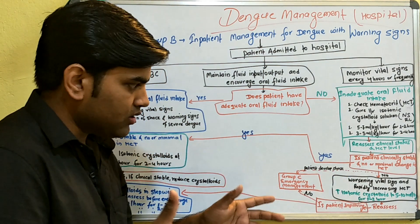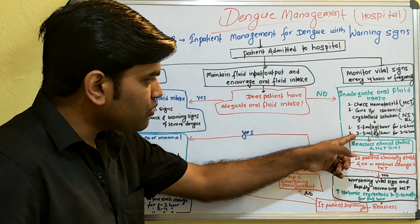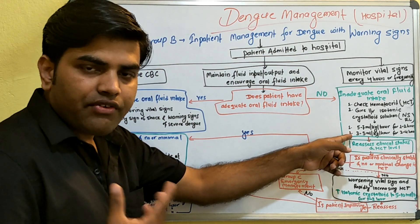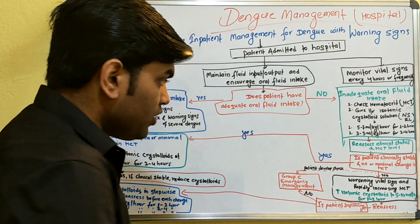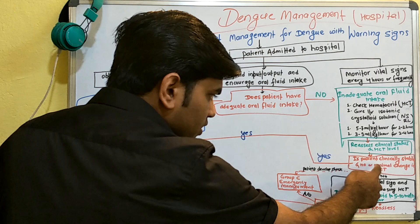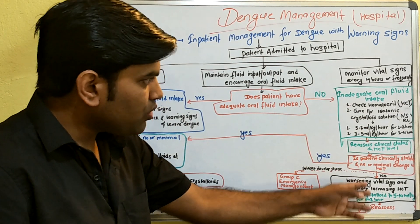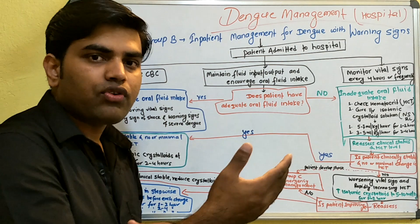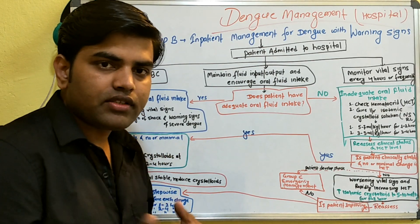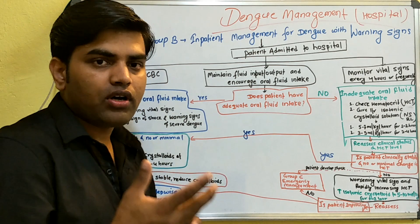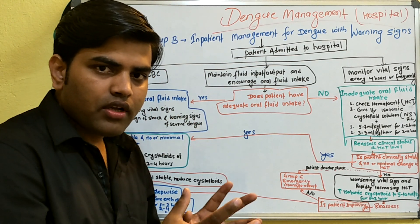For example, for a 60 kg patient: at 10 ml/kg, that is 600 ml/hr. After reassessment, if the patient is not improving and develops shock, move to Group C management — initially still using crystalloids, then escalating to colloids such as albumin-containing fluids, and if hematocrit is decreasing or blood loss is present, move to packed red blood cell transfusion.